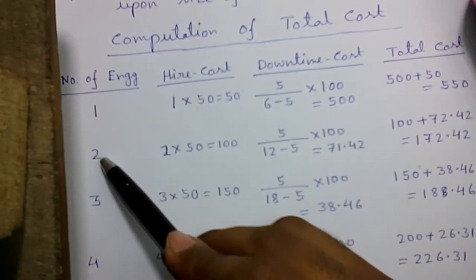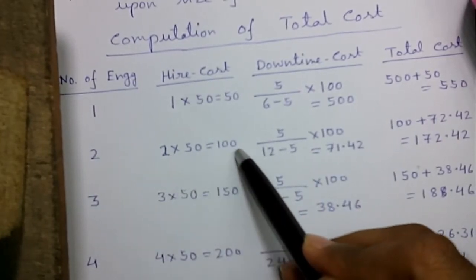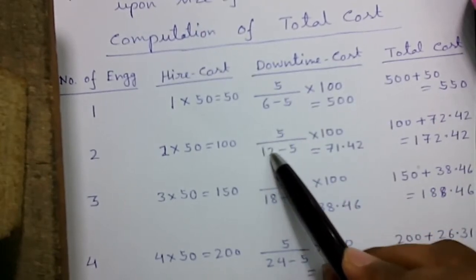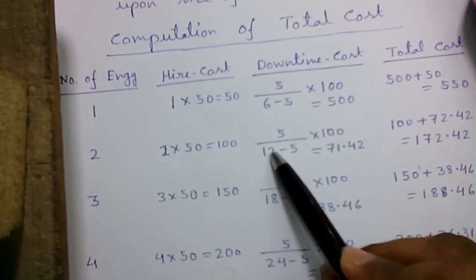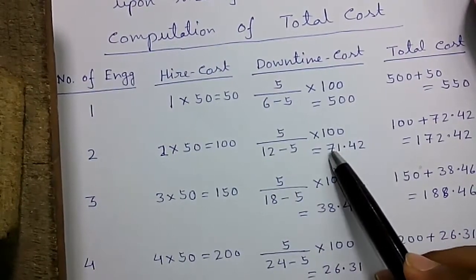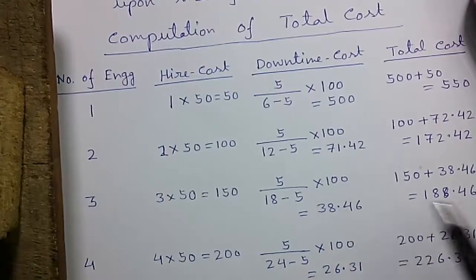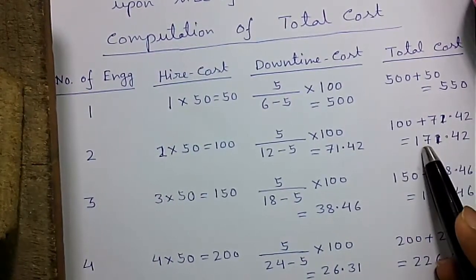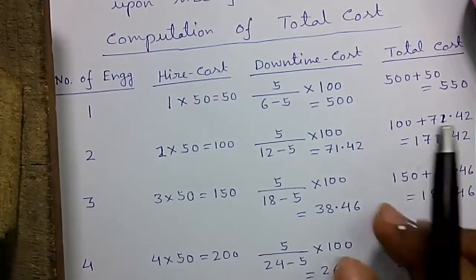Now for 2 engineers, the hire cost is 100, and downtime cost is 5 divided by 12 minus 5, times 100, which is 71.42. Two engineers can repair 12 servers in an hour. So the total cost is 100 plus 71.42, that is 171.42.